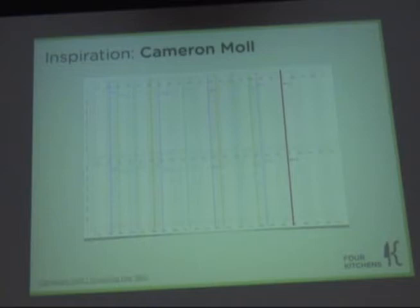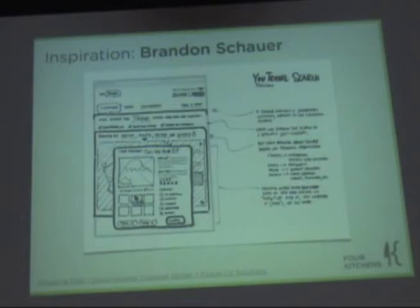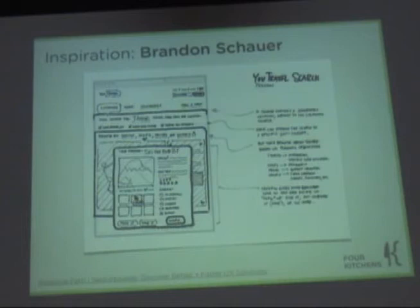Brandon Schauer is an information architect at Adaptive Path — they are big fans of paper prototyping. Part of what you can download with 960 is a PDF you can print out with either 12 or 16 columns — from one browser window up to nine browser windows on the page. The idea was: sketch as IAs on something that was ready to be designed in a column template that came as a Photoshop template and also mapped directly to a CSS file. That's the sum total of 960.